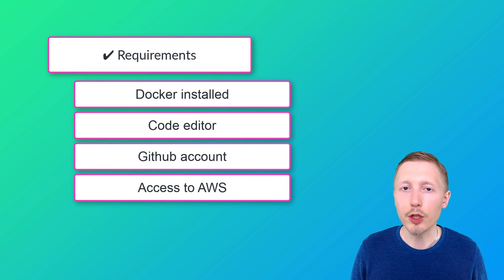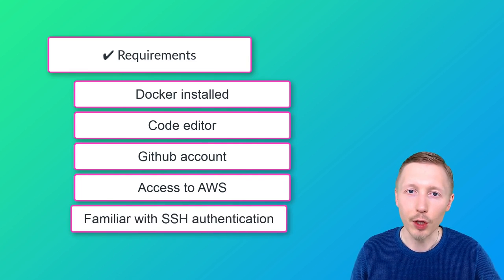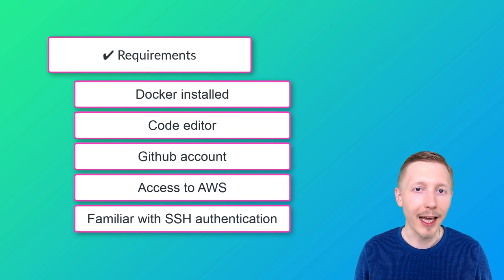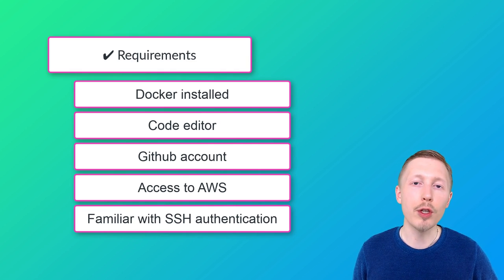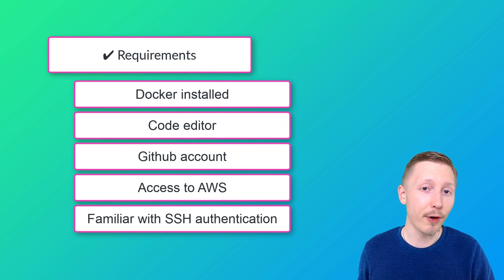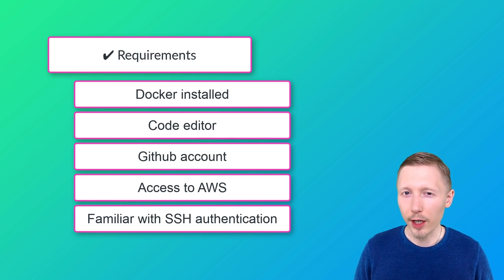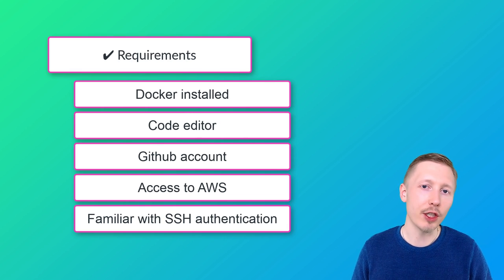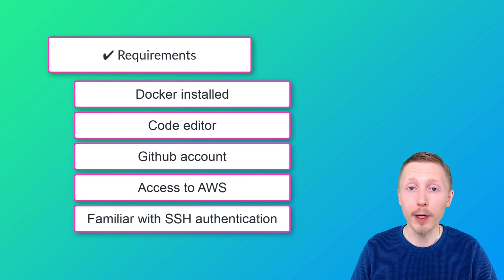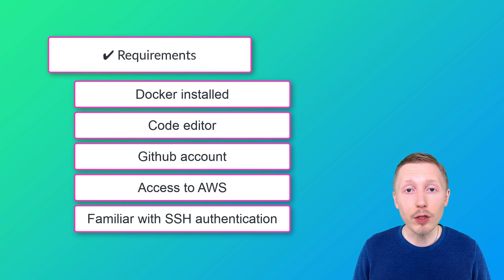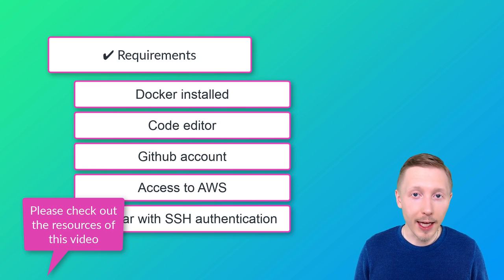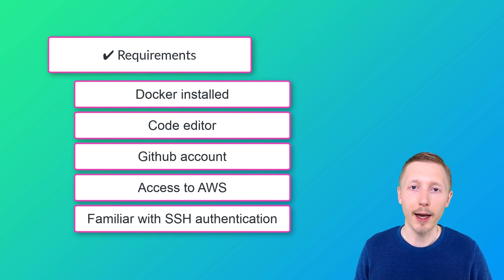Before you get started, you're also going to want to make sure you're familiar with SSH authentication. We're going to be using SSH to connect to GitHub and also to connect to the server we're going to be using, and then to pull the code from GitHub to the server. We're not going to cover in detail how to use SSH authentication. However, if not, don't worry — there's a link in the resources of this video to a GitHub tutorial that explains how it works.